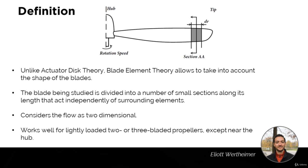However, because there will be more sections you will require more computational power and more calculations, which can take a lot more time. Unlike actuator disc theory, blade element theory allows you to take into account the shape of the blades — you can look at their airfoil shape and how this impacts the flow around them.